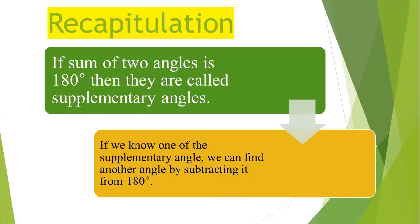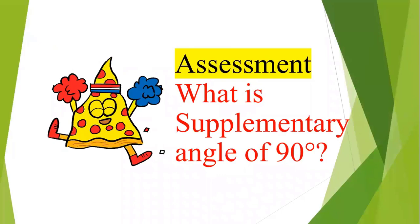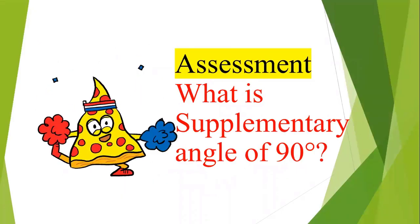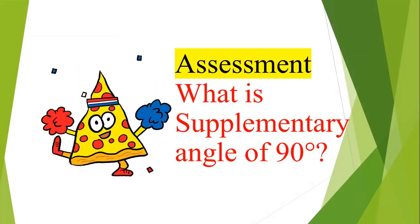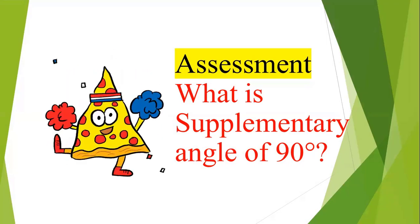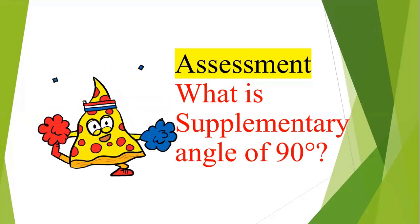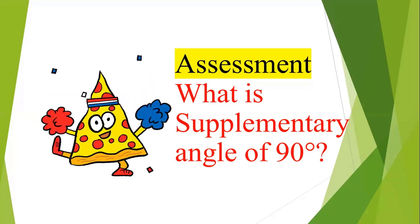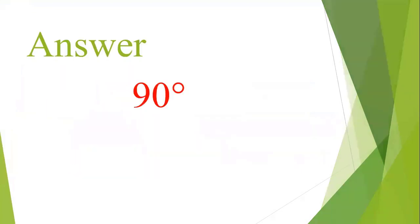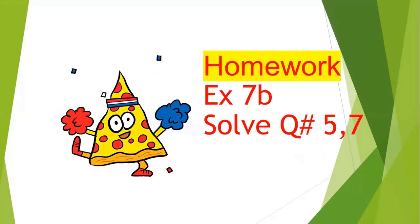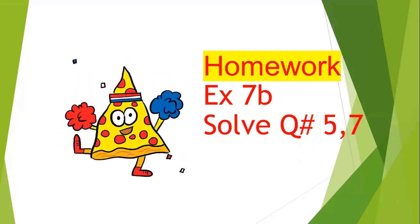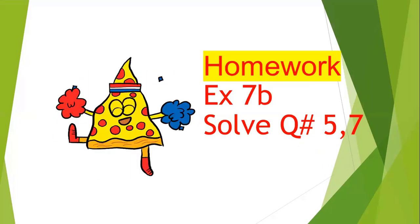We have studied that if the sum of two angles is 180 degrees, they are called supplementary angles. We can find one angle of a supplementary pair by subtracting the known angle from 180 degrees. Class, take one minute to think: what is the supplementary angle of 90 degrees? Yes, you are right — the answer is 90 degrees. Now you have to solve question numbers 5 and 7 in your notebook from exercise 7B. Thank you.